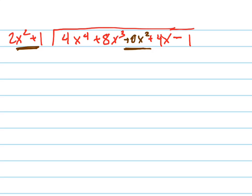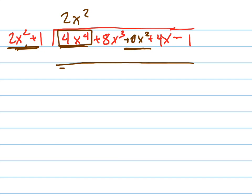See how there's a linear term missing in the divisor? We don't have an x term, but we're not going to worry too much about that — we'll deal with it when we write it underneath. So here we go: how many times does 2x squared go into 4x to the 4th? Divide and you get 2x squared.